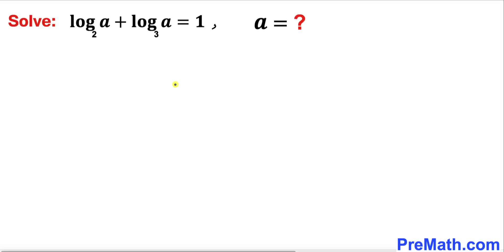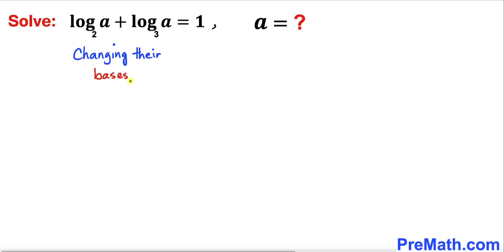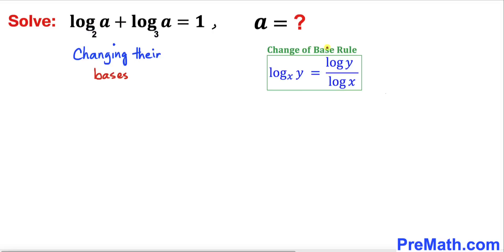Let's get started with the solution. We have two different bases — base 2 and base 3 — and we are going to manipulate this equation by changing their bases. So we are going to apply the change of base rule.